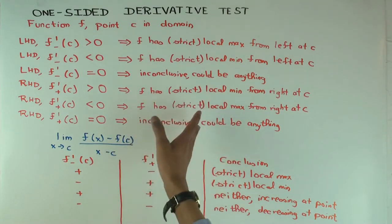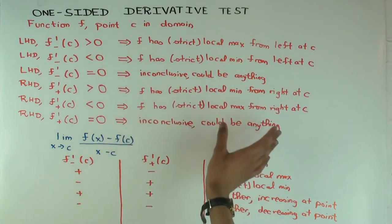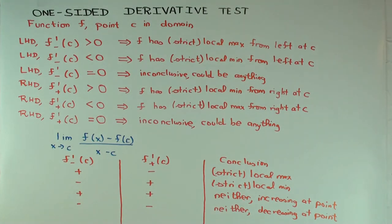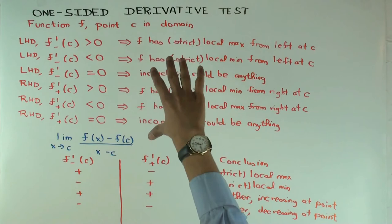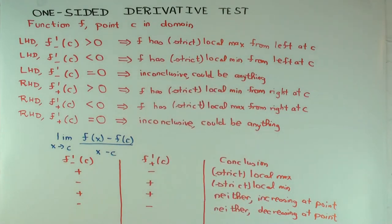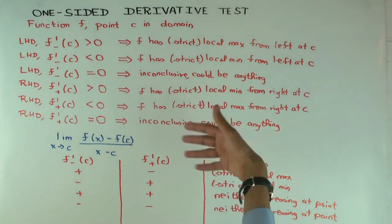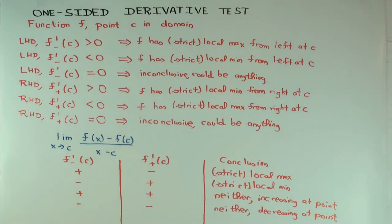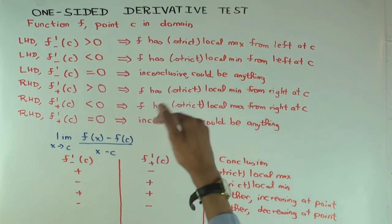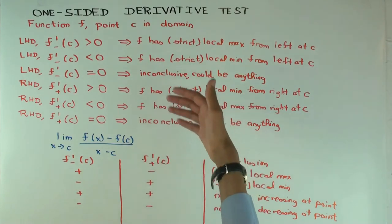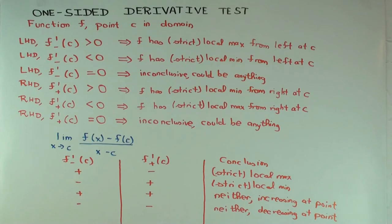The first derivative test, which looks at the sign of the derivative to the left and right of the point, usually does give information even when the derivative at the point is zero. So for polynomials, where critical points always have derivative zero, this one-sided test is useless, whereas the first derivative test will conclusively establish whether you have a local max, min, or neither. However, there are also situations where this one-sided test works and the first derivative test doesn't — for instance, functions that are oscillatory or not continuous enough on the immediate left or right.